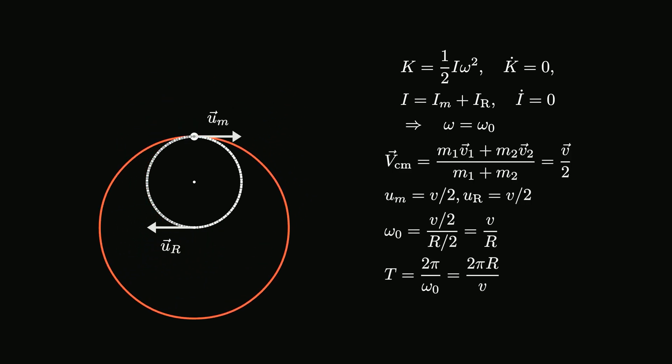Initial angular speed may be found by noting that the center of mass frame moves half the original speed v. Therefore, center of mass frame speed of the objects are v over 2.